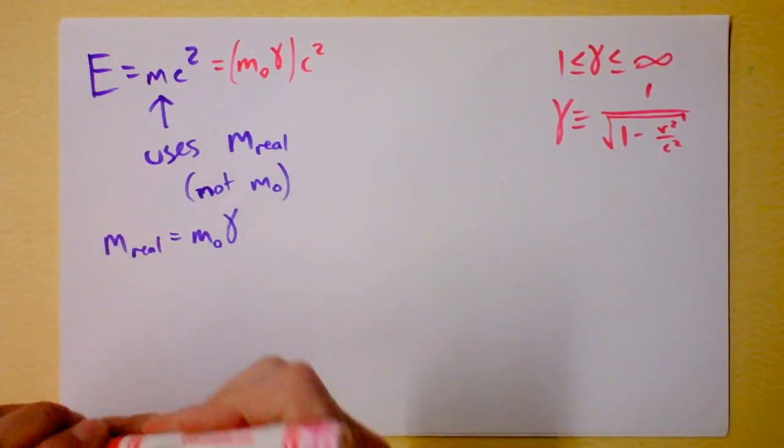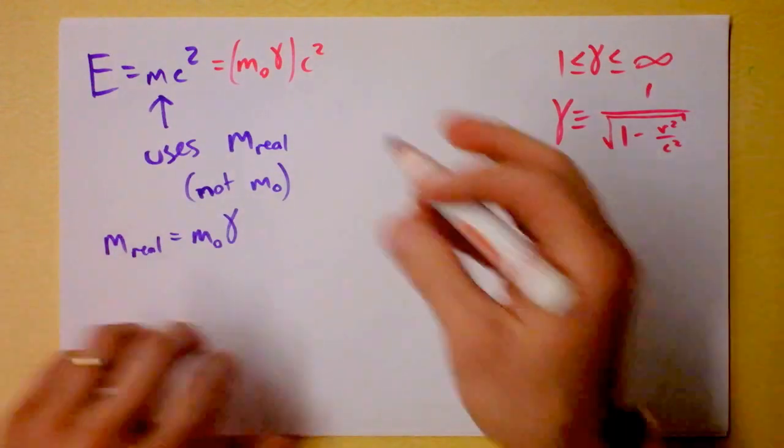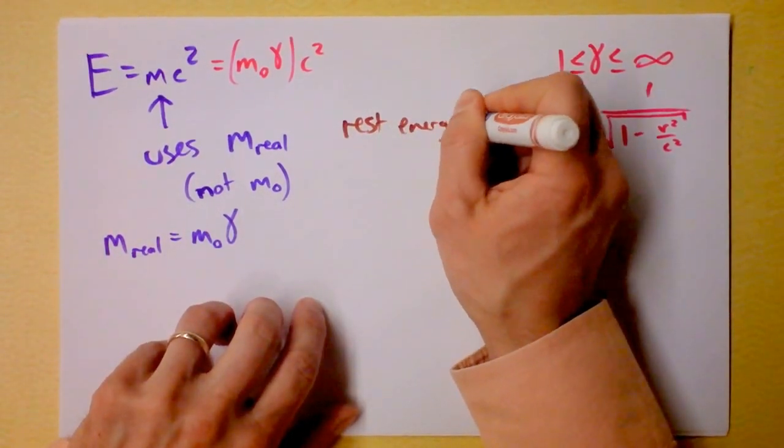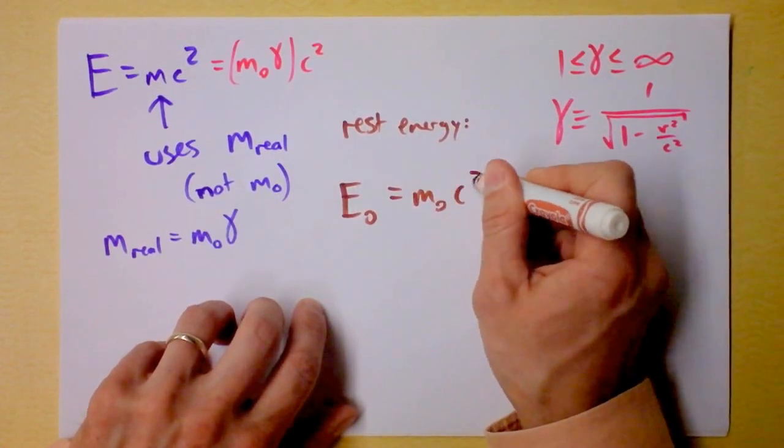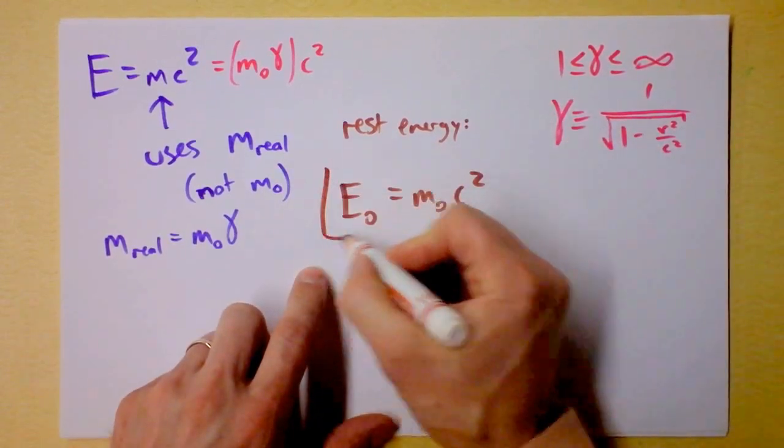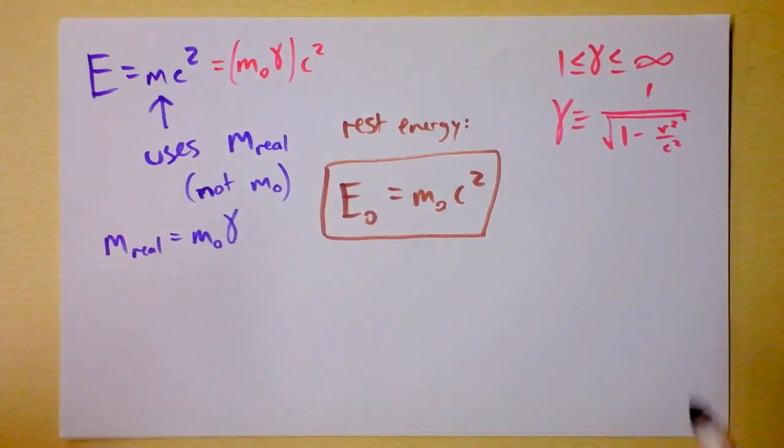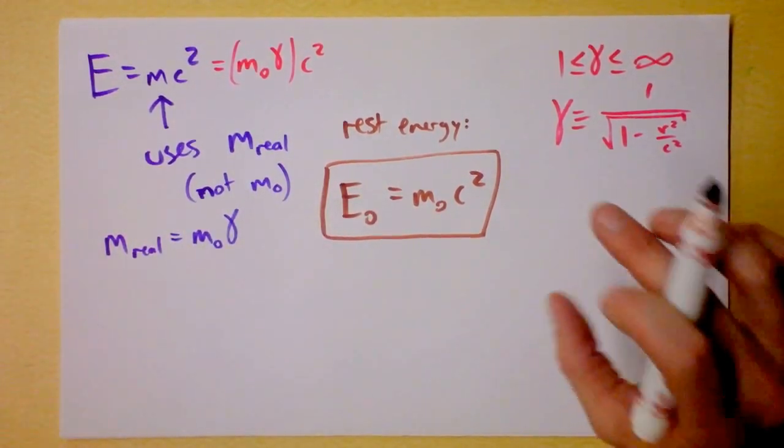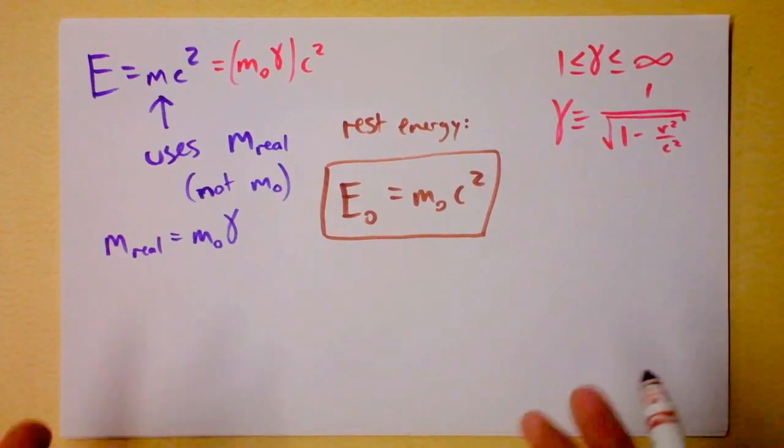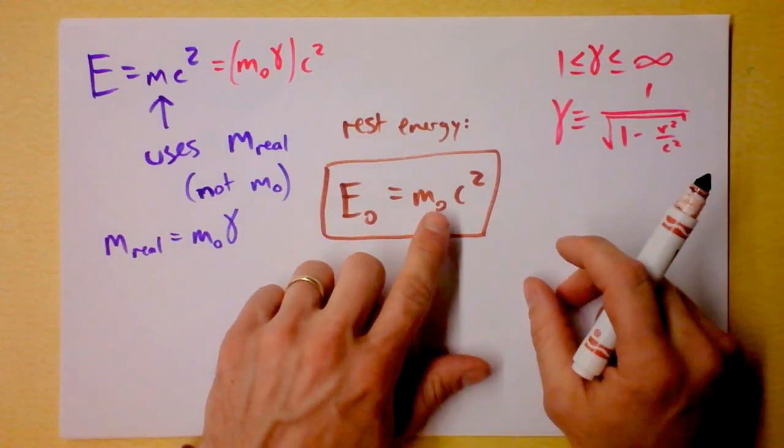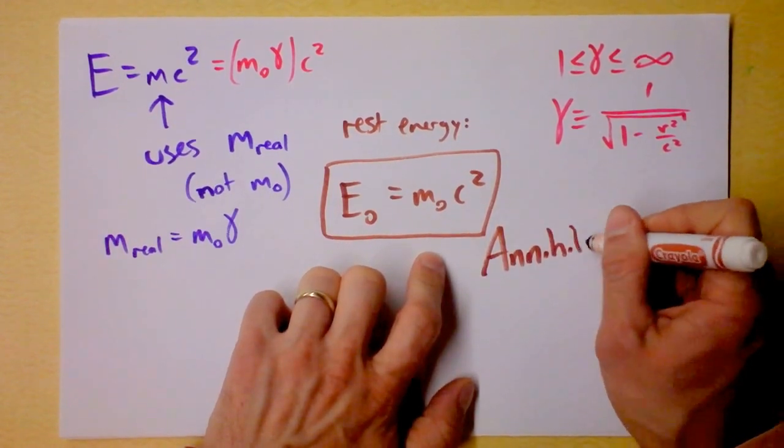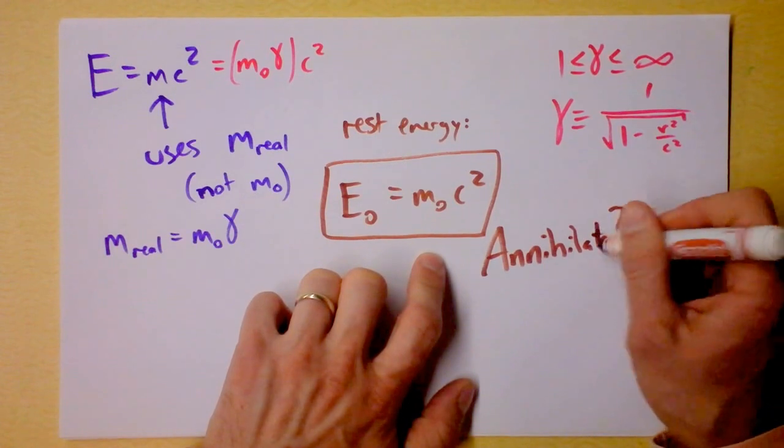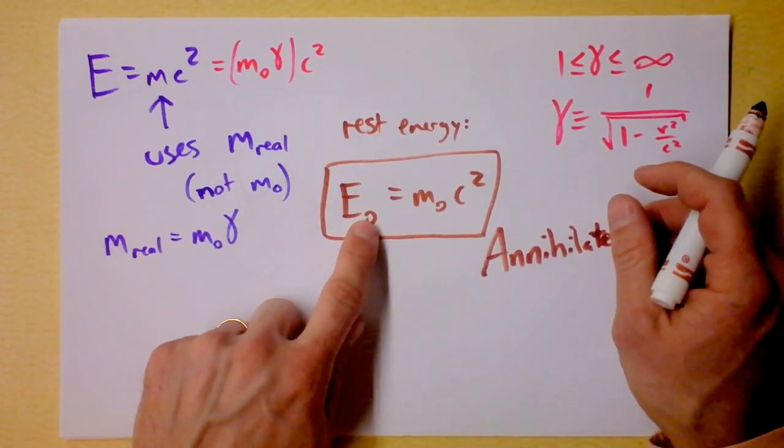I also want to point out something called rest energy. Rest energy is E₀ = m₀c². This is the deal breaker - it says that when things are just sitting still, they have a fundamental energy to them. If you could eliminate the mass of a thing or annihilate it, you could liberate this rest energy from the thing.